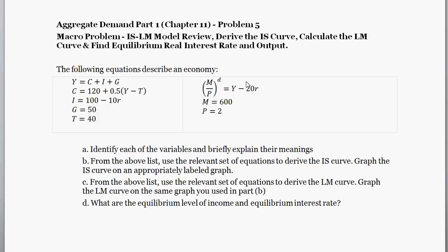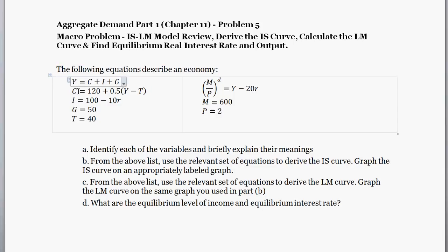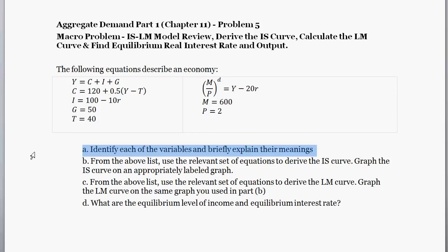This question is borrowed from Mankiw's Macroeconomics, Chapter 11, which in the edition I have is Aggregate Demand Part 1. They seem to shift chapters around but not much else from edition to edition. This is problem 5. The following equations describe an economy — I've split them up into the IS curve equations and the LM curve equations. Part A asks us to identify each of the variables and briefly explain their meaning.